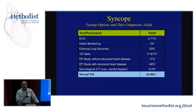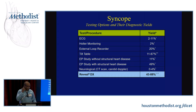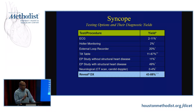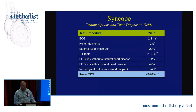Let's look at all the different diagnostic tests available and their yields: EKG, Holter monitoring, external loop recorder, tilt table, EP studies, EP with structural heart disease, and neurocardiogenic syncope evaluation. Implantable loop recorders have a far superior yield. Remember, you still need to do at least a 24 to 48-hour Holter before committing to these more sophisticated tests.